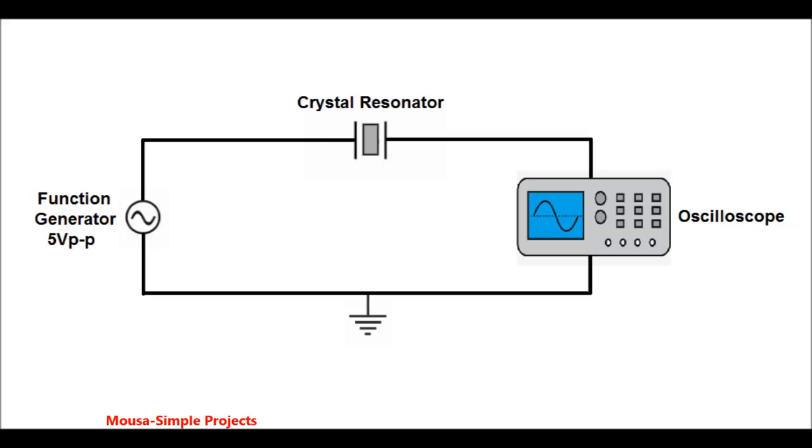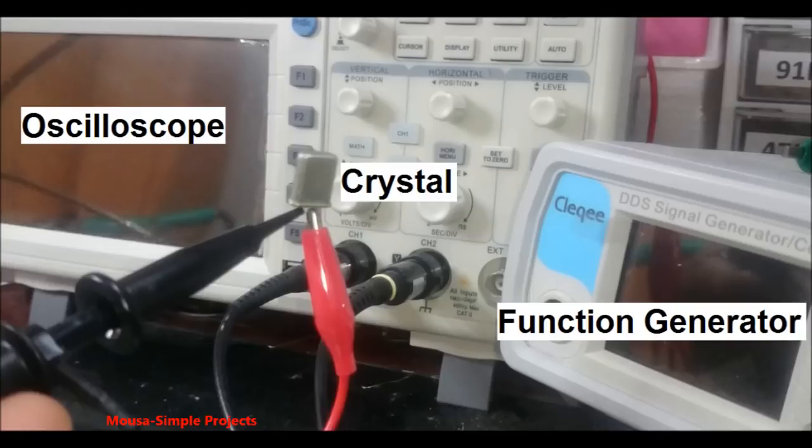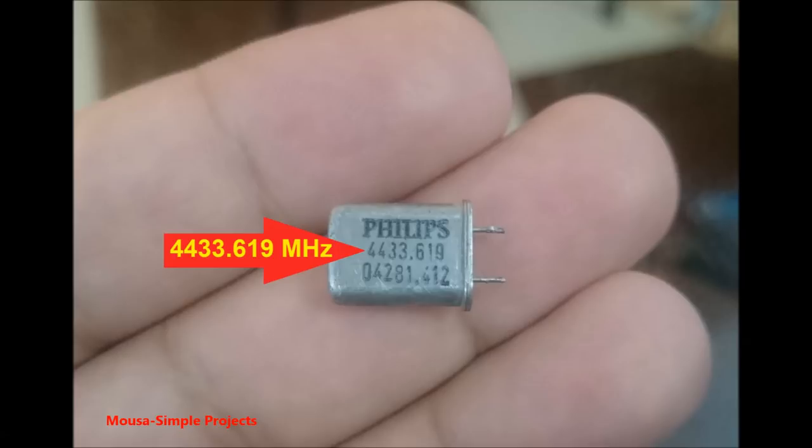First you have to connect your crystal between the function generator and oscilloscope probe in series. This is the resonance frequency of my crystal.